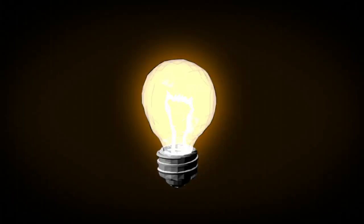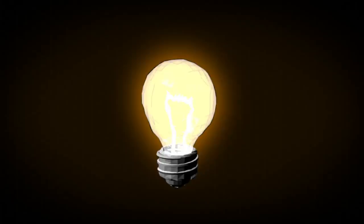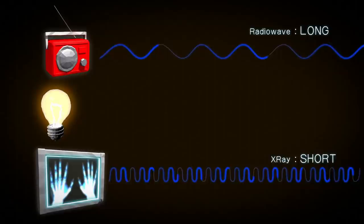The only thing that makes one kind of light different from another is its wavelength. Radio waves have long wavelengths, while x-rays have short wavelengths, and visible light, the kind you can actually see, is somewhere in between.